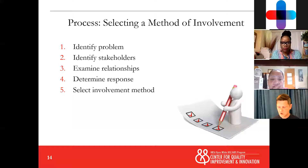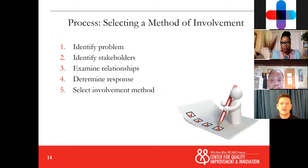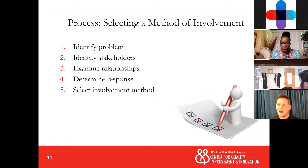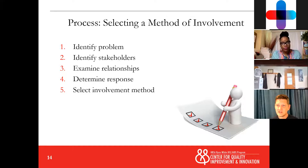Then examine those relationships. What relationships need to be built? What trust needs to be developed so that you can get the right people to the table? Then determine what the appropriate response is — where do we go from here, what are the next steps? And then select your method of involvement. Which method will bring the best outcome? With that intake form example, agitation and activism might not be the best response — advocacy is the better response in that case. Advocacy is not always the appropriate response, but often when we're talking about quality improvement, it is the best method.